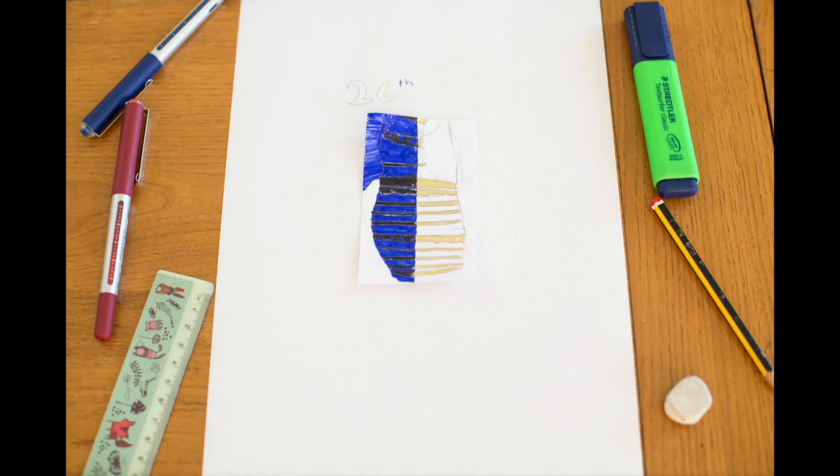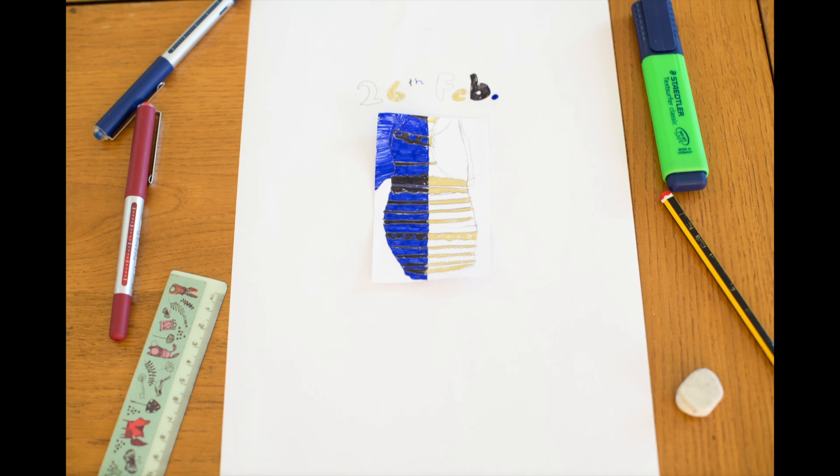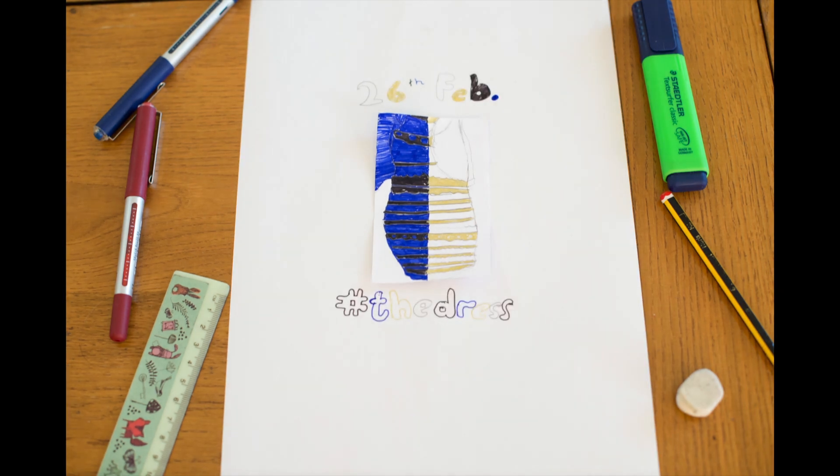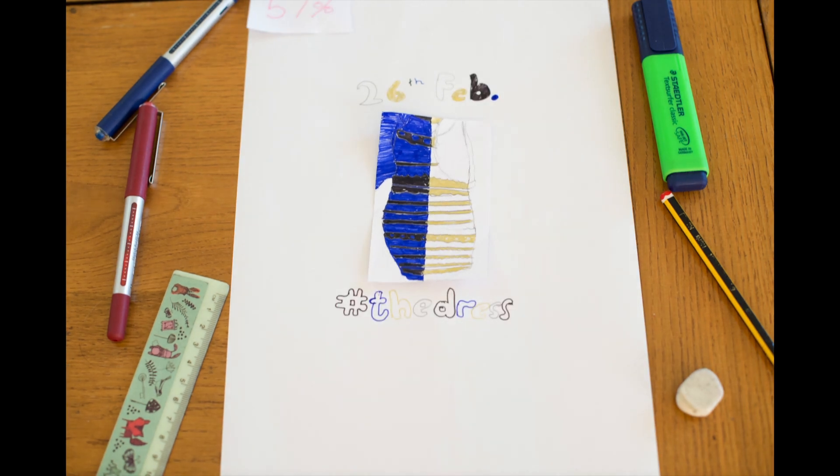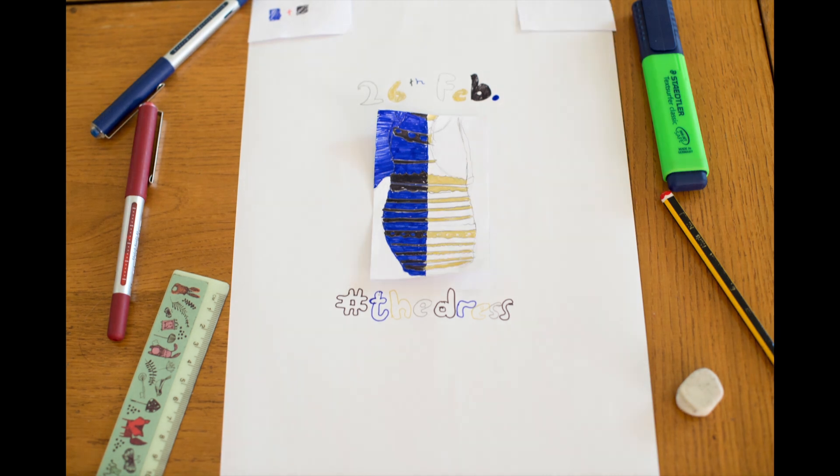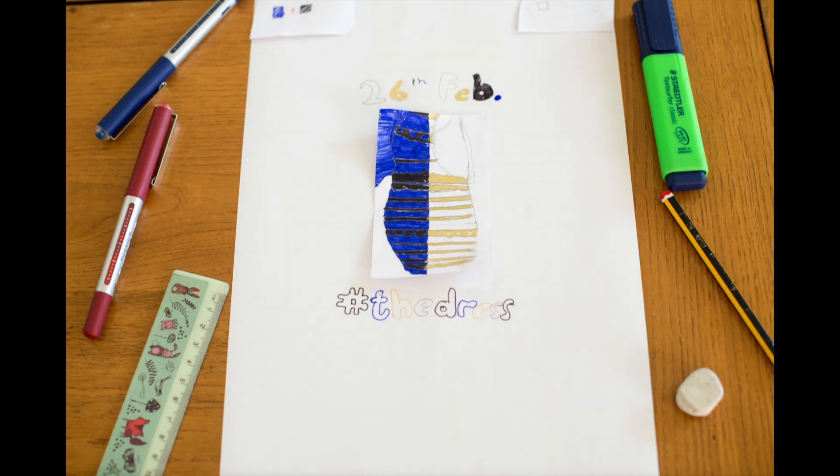You have probably heard about the dress that took the internet by storm on February 26th. Hashtag the dress: 50% of people saw black and blue (the original dress), 30% saw white and gold, 10% saw blue and gold, and 3% said the dress switched between colors.